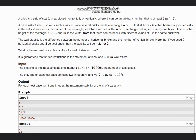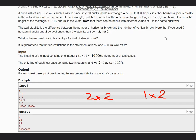Now let's see the test cases. For 2×2, there can be two 1×2 bricks horizontally placed on top of each other. Hence the maximum stability is 2.